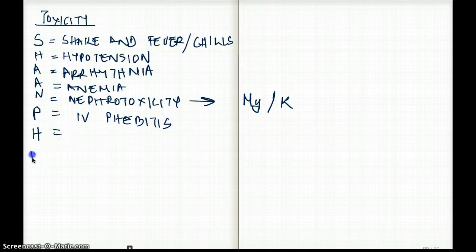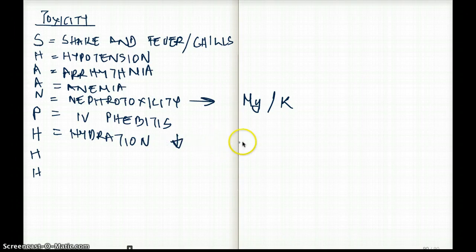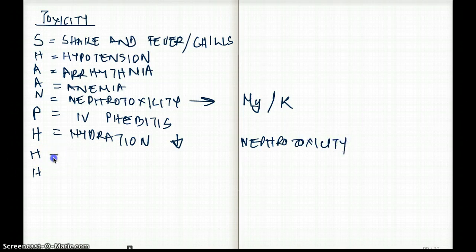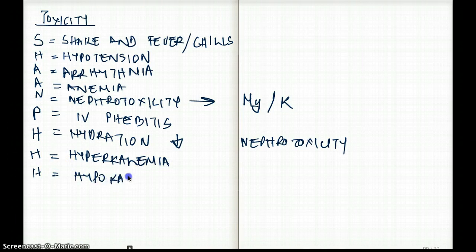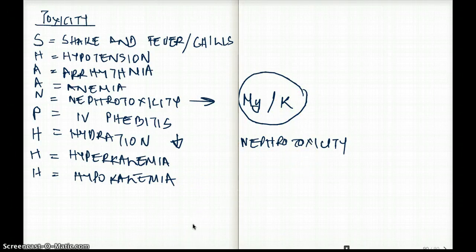What about H? There is actually three H's. The first H is going to be hydration. Hydration will reduce nephrotoxicity. The other is going to be for hyperkalemia. And, the last is for hypokalemia. Like I mentioned, that Amphotericin B does cause weird electrolyte imbalance. So, it can cause either hyper or hypokalemia. It can cause both. As a result, we do have to give electrolytes to replace it.